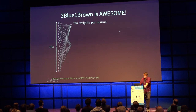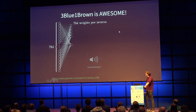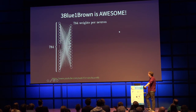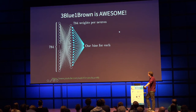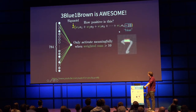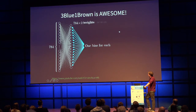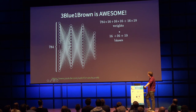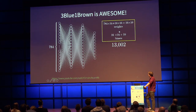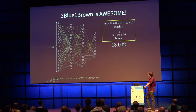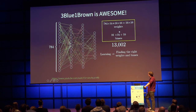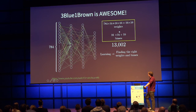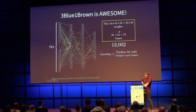Every neuron in a layer is connected to all 784 pixel inputs, and each of those connections has its own weight and bias — that's a lot. With a hidden layer of 16 neurons, that's 784 times 16 weights plus 16 biases just from the first to second layer. All in, this simple network has about 13,000 total weights and biases — 13,000 knobs and dials. Learning means finding valid settings for all these numbers to solve the problem at hand.